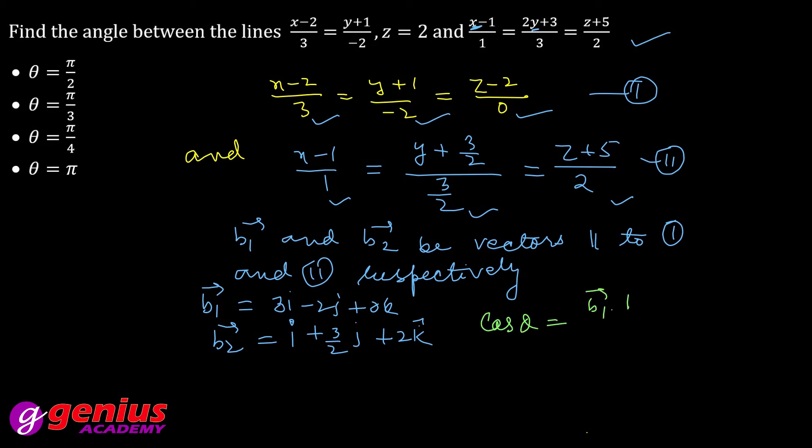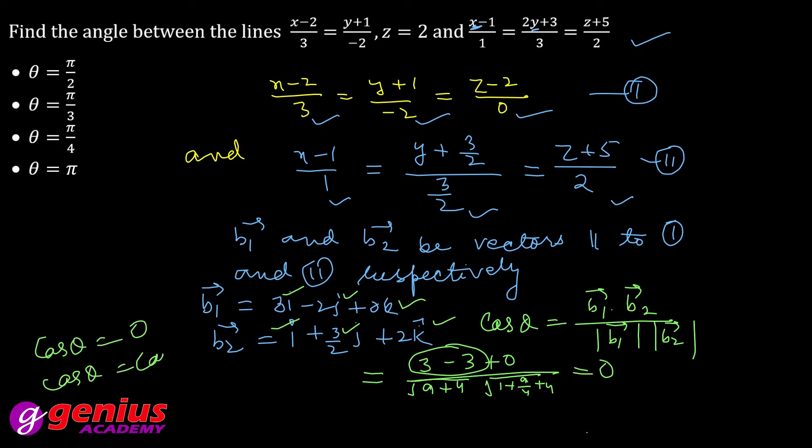We know that cos theta equals B1 vector dot B2 vector divided by magnitude of B1 vector magnitude of B2 vector. So you multiply: 3 times 1 is 3, and minus 2 times 2 is cancelled, so 3 left. This is 0 into something, 0. So cos theta equal to 0. When will it happen? When cos is 90 degree, that means theta is pi/2.